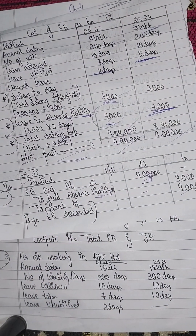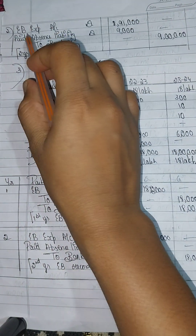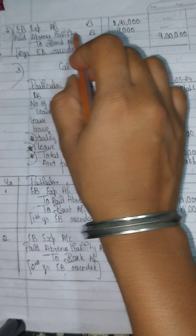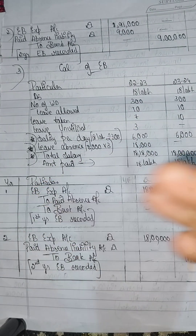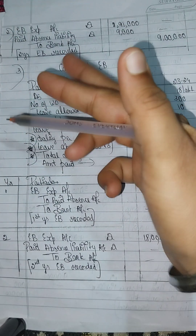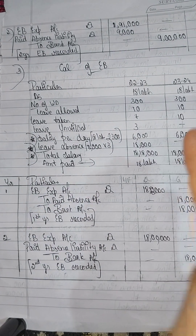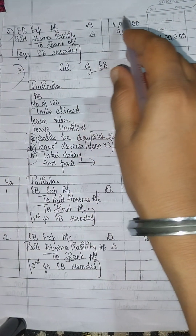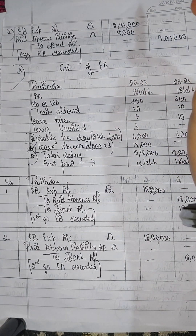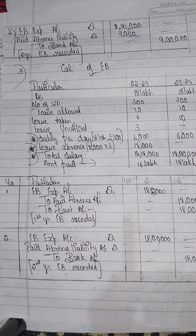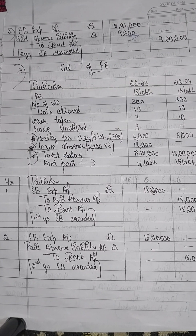The journal entries for this problem are as follows. The first entry: Employee Benefit Expenses Account debit, to Paid Absence Liabilities Account and to Bank Account. The second entry: Employee Benefit Expenses Account debit, to Paid Absence Liabilities. The debit amount is 9 lakh to Bank, expenses 8,91,000, and Paid Absence Liabilities is 9,000.